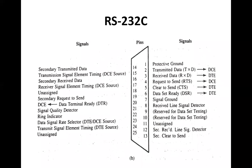RS-232C has 25 pins. The signal names, signal directions, and descriptions of each pin are defined in the figure. In most applications, only a few of these pins are used. Pin number one is the protective ground, also called frame ground.